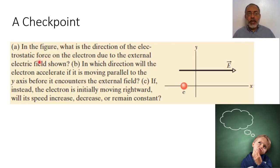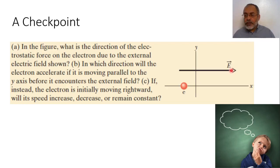In this figure, what is the direction of the electrostatic force on the electron due to the external field? The electron is a negative charge, so the direction of the force on the electron in this case would be opposite to the direction of the electric field. The direction of the electric field is in positive X, so the direction of the force on the electron would be in negative X.